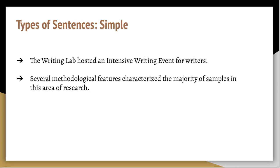Welcome back! There are four main types of sentences. The first type we'll cover today is the simple sentence — sentences with one independent clause and no dependent clause. Independent clauses are clauses that can stand alone as complete sentences because they contain a subject and a verb. Independent clauses make up their own complete thought.